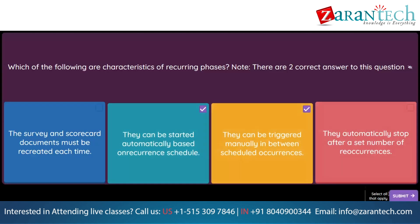Question. Which content type within a survey provides the most granular scores when mapped to a KPI? Option 1: Requirement. Option 2: Attachment. Option 3: Section. Option 4: Question.